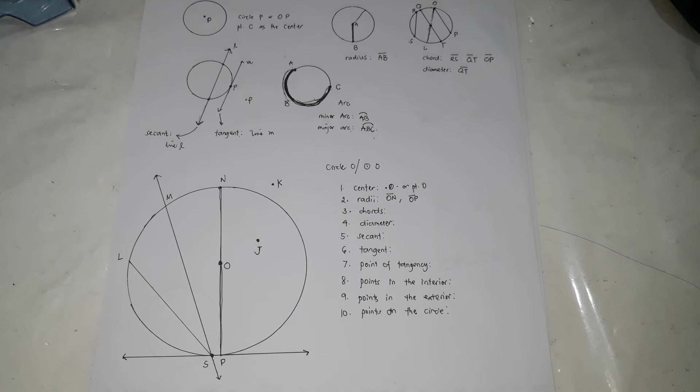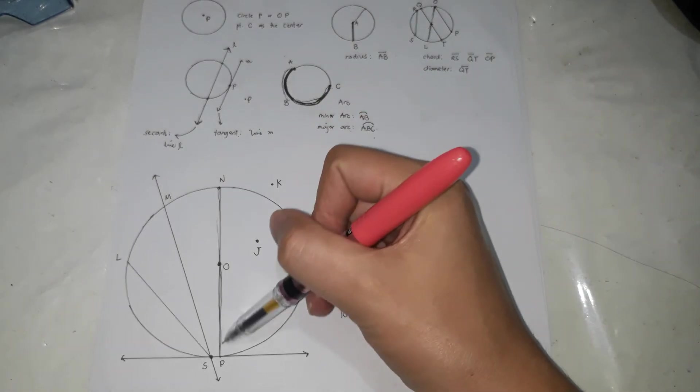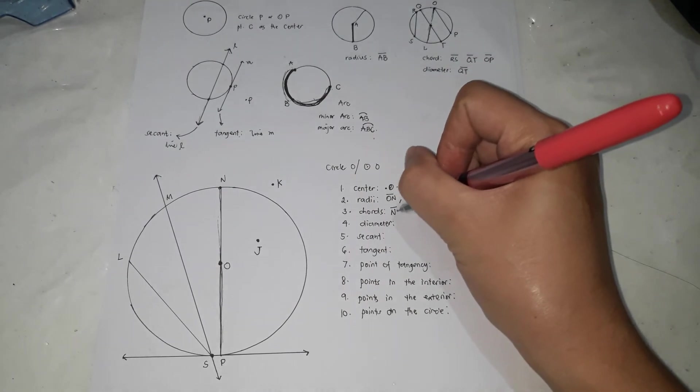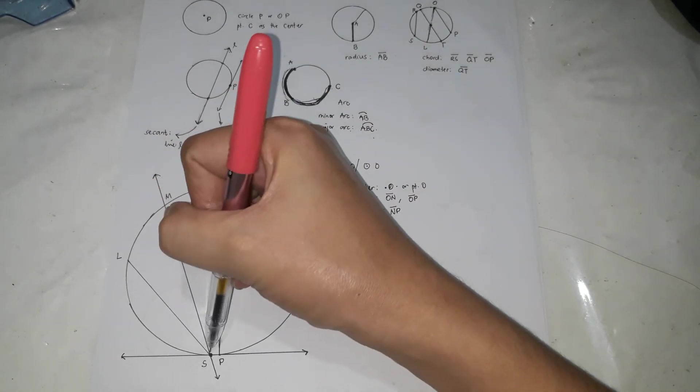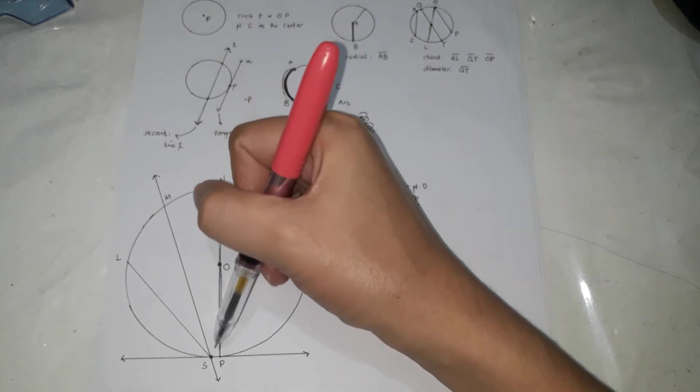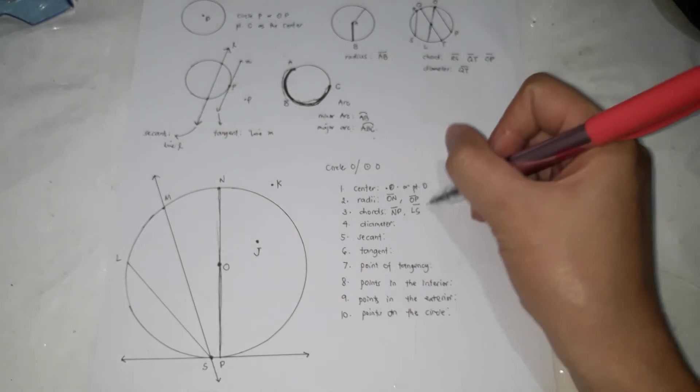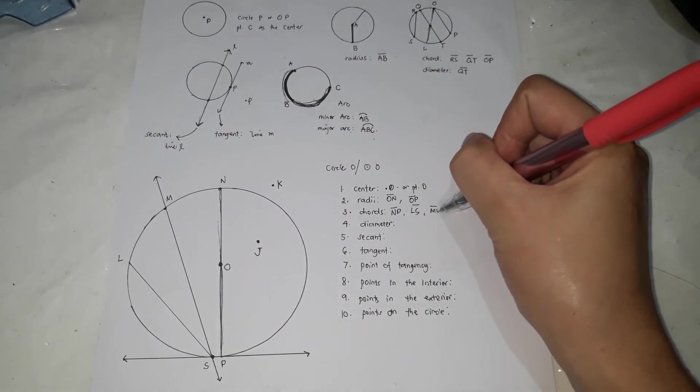Chord. A chord is a line segment with endpoints on the circle. So first is N, P. Very good. And L, S. Can you consider this one? From here to here, yes. MP. So that can be line segment MP.